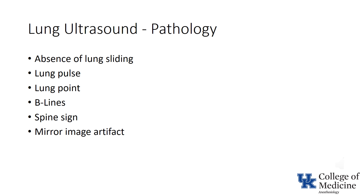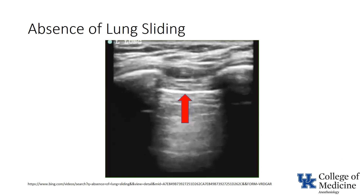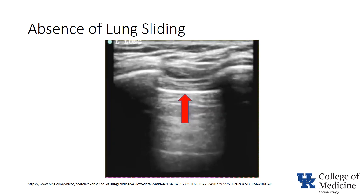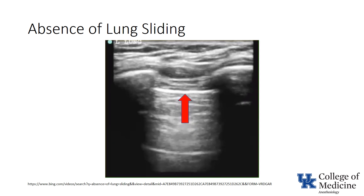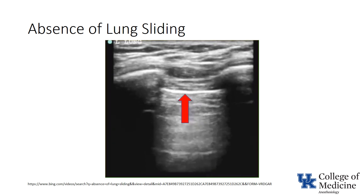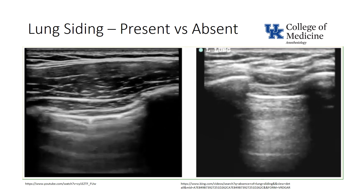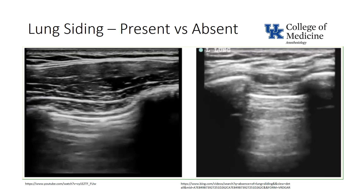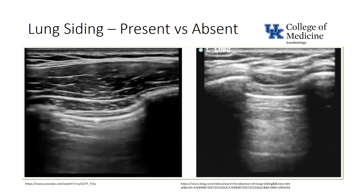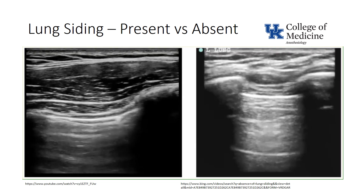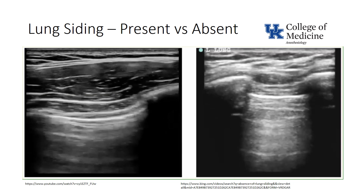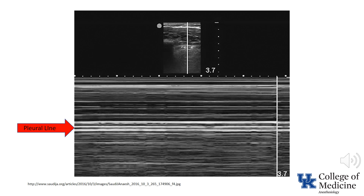Watch this video. Notice that although the pleural line moves, there is no shimmering or sliding evident, indicating the absence of lung sliding. Notice the difference between the motion of the pleural lines on the two videos: the video on the left clearly shows back and forth movement on the pleural line, which is absent from the video on the right. This M-mode image, termed the barcode or stratosphere sign, shows parallel lines below the pleural line essentially indistinguishable from the area above it.